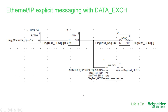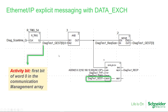Two solutions are available to implement Ethernet IP explicit messaging. One is the data exchange function block. There is an activity bit related to the status of the function block, shown in this example being used to ensure the transaction has finished before triggering it again.